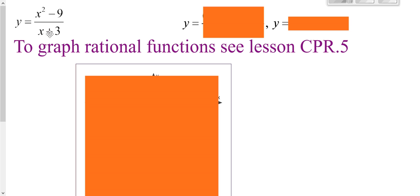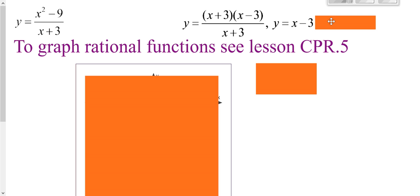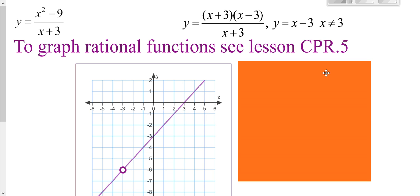Here we are graphing a rational function. You should remember from CPR5 to graph a rational function, you factor the top and the bottom. In this case, you have a common factor, so you know there's going to be a hole at x = -3 because that's what causes that common factor to be zero. You're left with x - 3, and so you're going to graph this line, slope of one, y-intercept of -3, and just make sure you have a hole in your graph at x = -3.